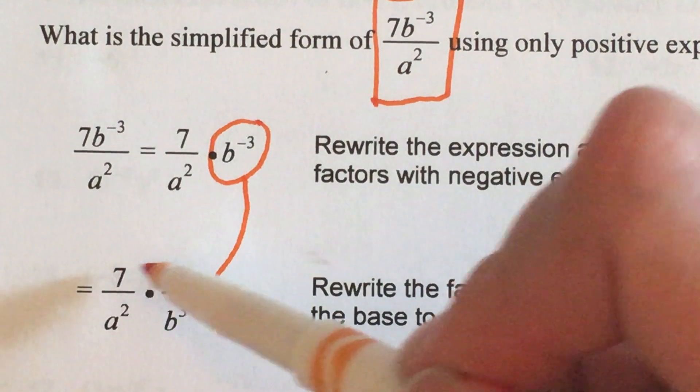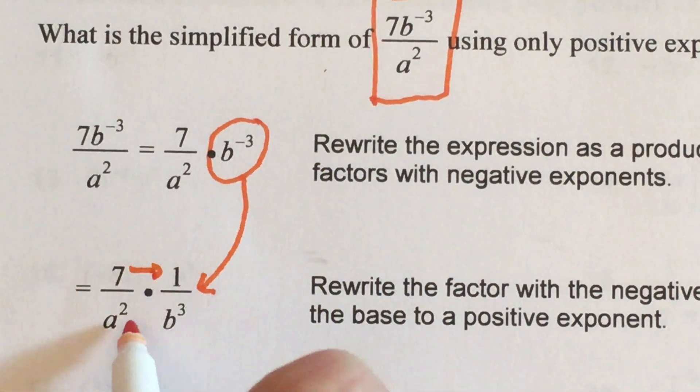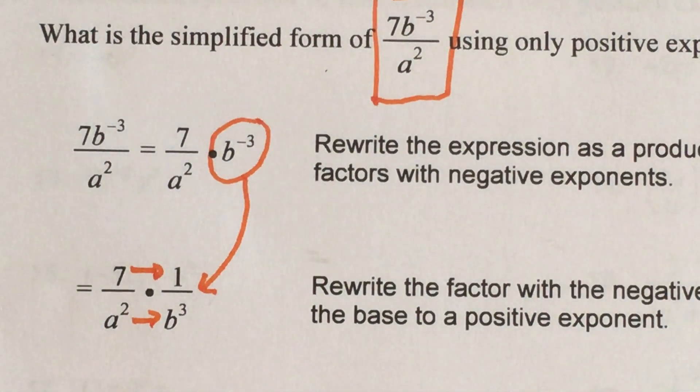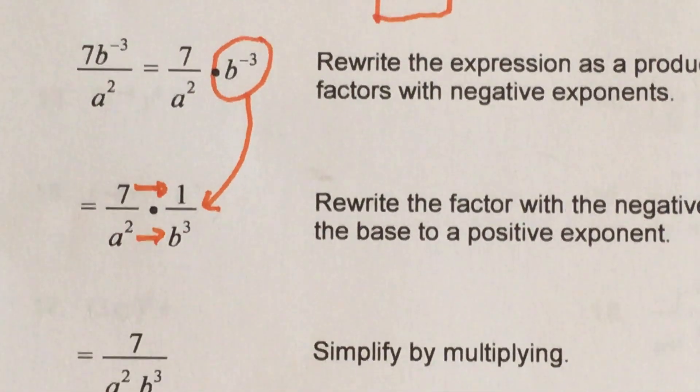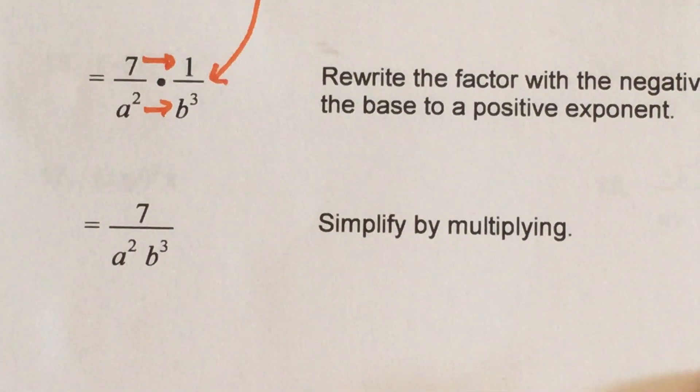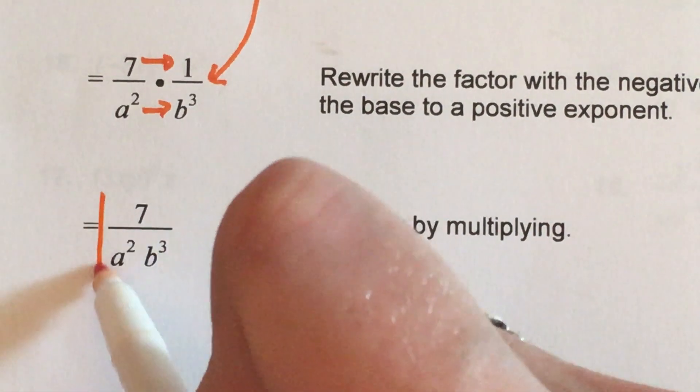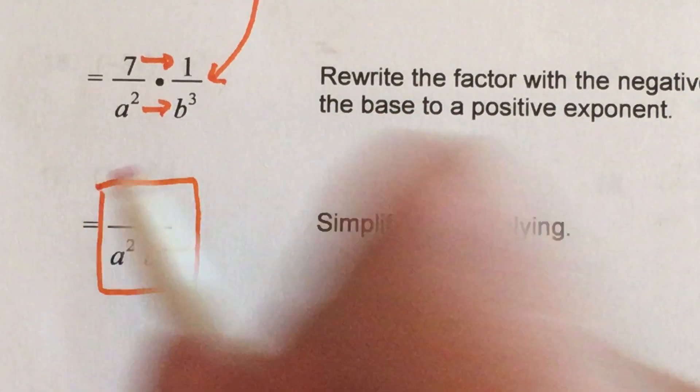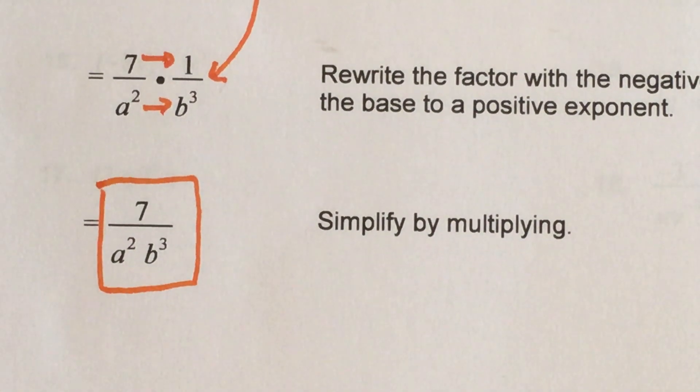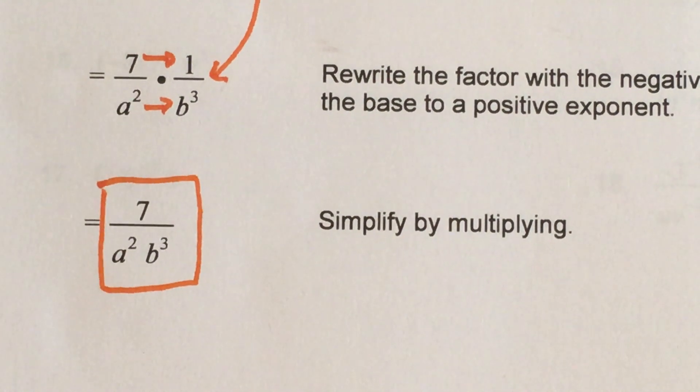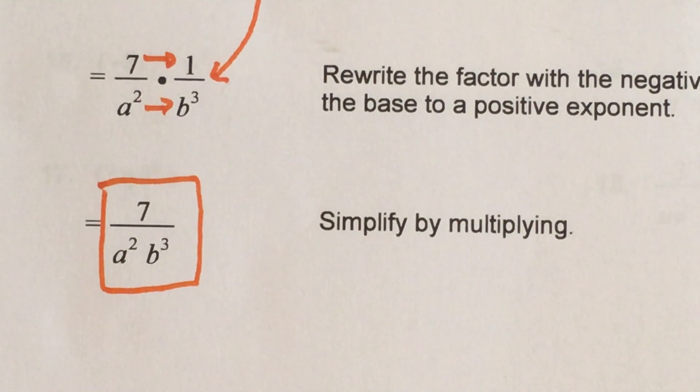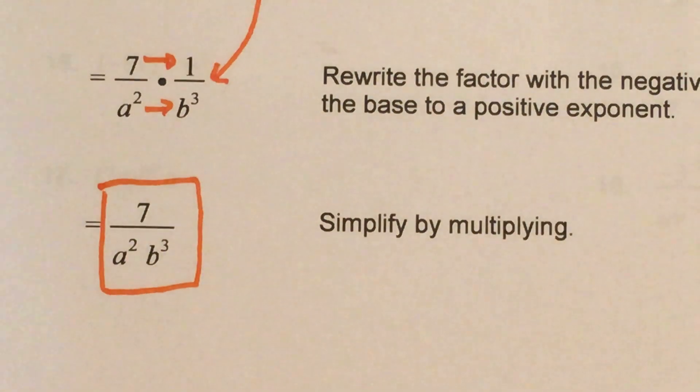And then these two terms were put back together. a squared times b cubed is just a squared b cubed. 7 times 1, so you just multiply straight across like you normally would and this is your final answer.